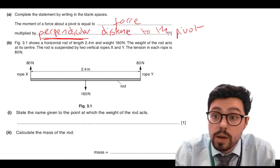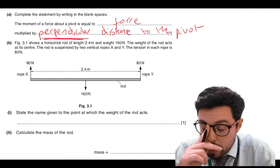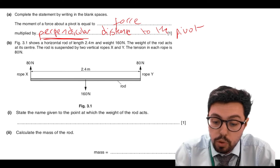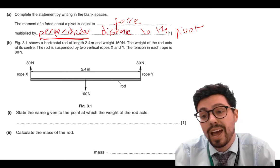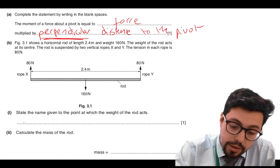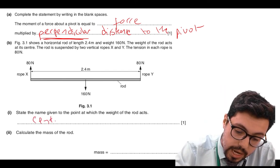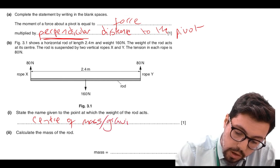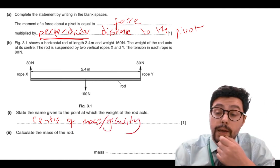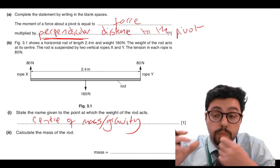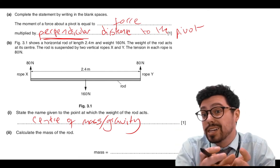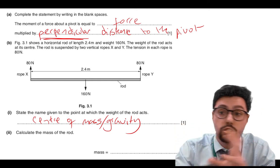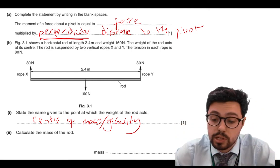We've then got a diagram of our rods. The key bit on part I is: state the name given to the point at which the weight of the rod acts. This is again a recall question, and this point is the centre of mass or centre of gravity. The point at which the weight of an object acts is its centre of mass — we sometimes also call that the centre of gravity.